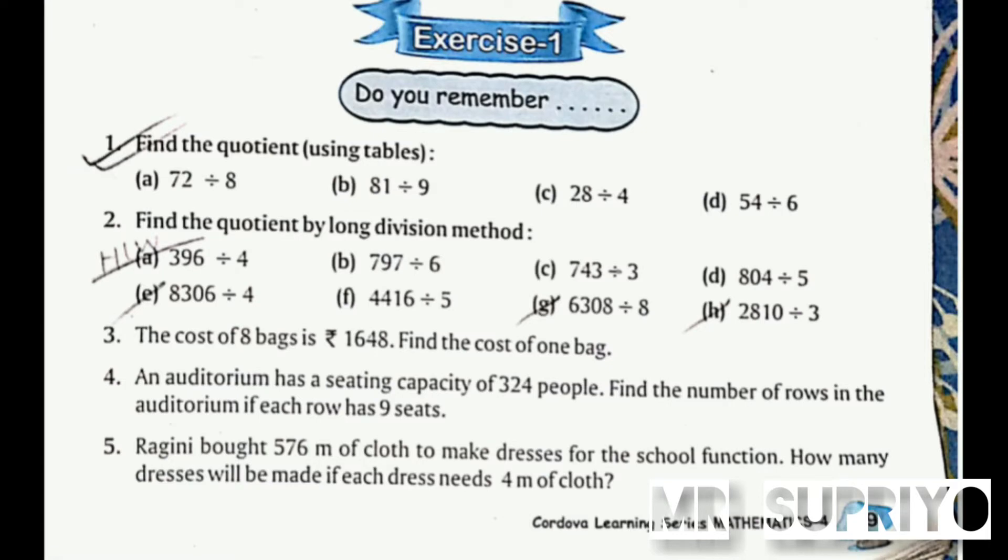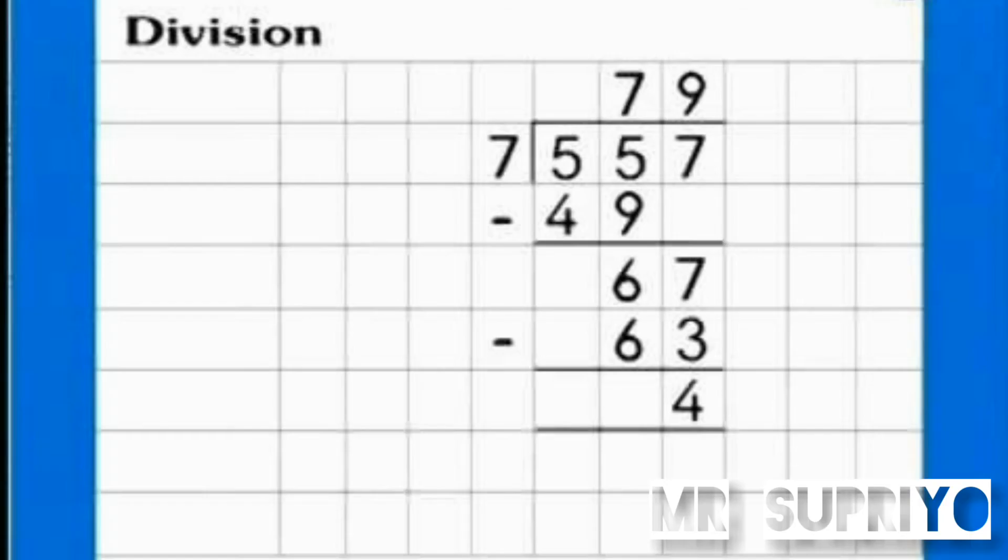Number 2: find the quotient by long division method. 557 divided by 7. 7 times 7 is 49. 55 minus 49 equals 6. Bring down 7 to get 67. 7 times 9 is 63, so the remainder is 4. The quotient is 79 and the remainder is 4.